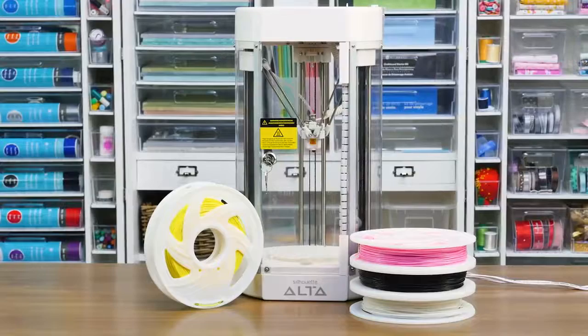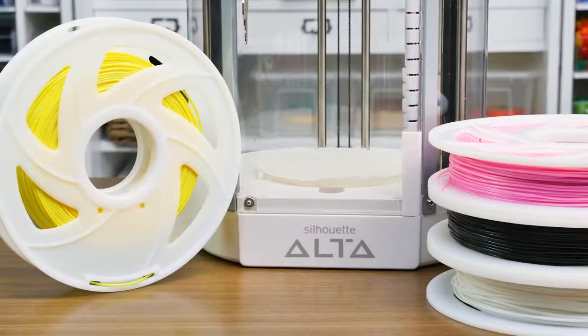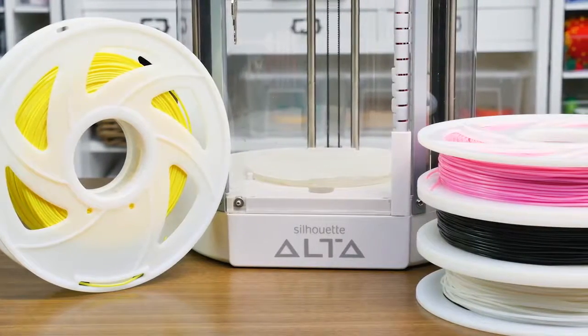Filament Loading. The Alta can print any PLA or polylactic acid filament that is 1.75 mm thick.